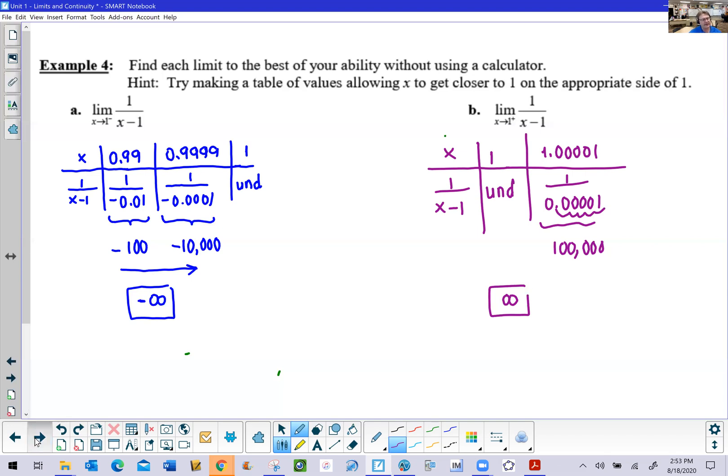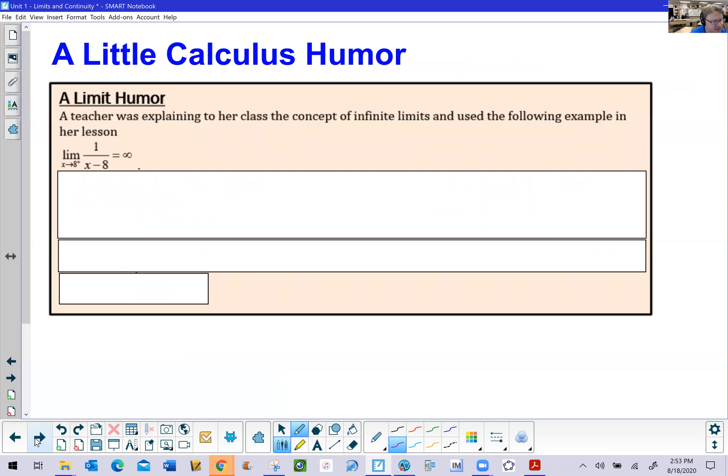Now to conclude, I've got a little calculus humor here to finish with. A teacher was explaining to her class the concept of infinite limits and used the following example. It's very similar to the problem that we just did, except I'm replacing the 1 with an 8 that x is approaching, and the denominator is x minus 8 instead of x minus 1. Because x approaches 8 from the right side, we can slowly get close to that value of 8 and end up having 1 over some small positive decimal that's going to be infinity. Very similar to what we did in example four, the second part.